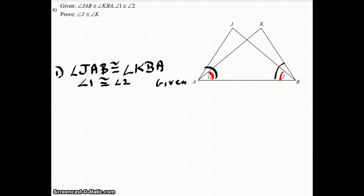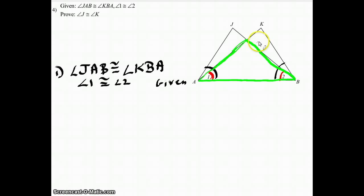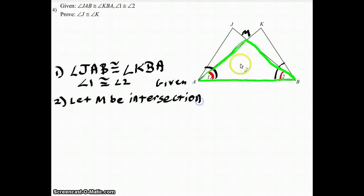What I'm going to look at next is this triangle that I'm highlighting in green. Looking at that triangle, it has angles one and two contained just within it. I can't name the triangle yet because it doesn't have a letter, so I'm going to add a letter and call it M. I need to add it as a statement: let M be the intersection of segment AK and segment JB.